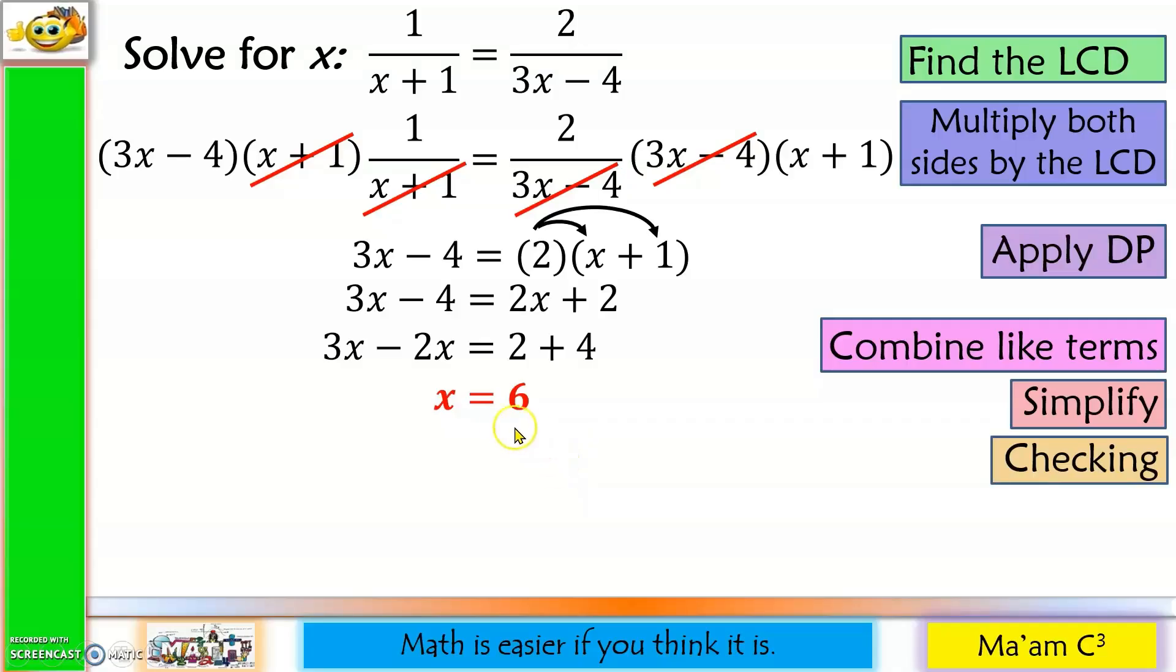For checking, all you have to do is substitute the value of x to the original equation. So, replacing x with 6: 1 over 6 plus 1 equals 2 over 3 times 6 minus 4. The question is, are they equal? This is 1 over 7. 3 times 6 is 18, 18 minus 4 is 14. So this is 1 over 7. Lowest term of 2 over 14 is also 1 over 7. Therefore, they are equal. So it means x equals 6 is correct.